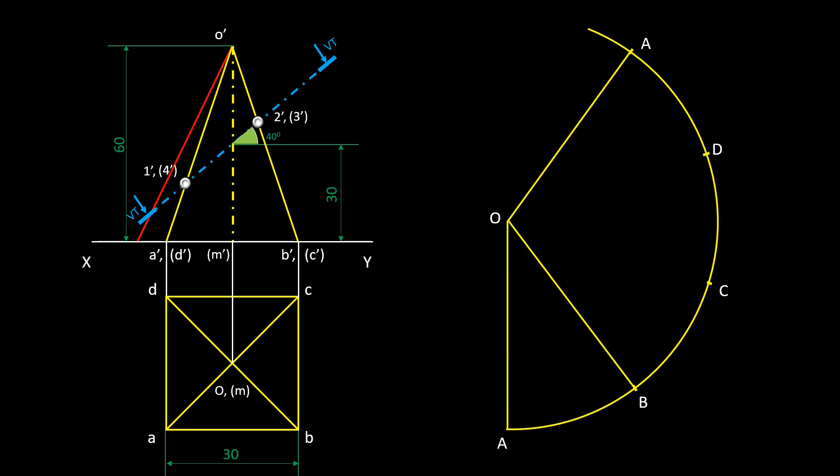Draw the slant edges OA, OB, OC, and OD on the pattern. And draw the base edges AB, BC, CD, and DA. This is the pattern of the square pyramid.